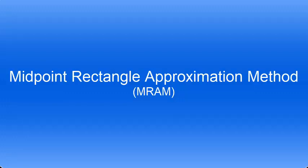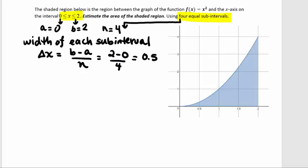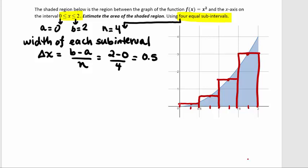The next approximation is the Midpoint Rectangle Approximation. Instead of using right or left endpoints, we go to the midpoint of each interval. Here you can see the midpoint of each of our four intervals. We go up to the height of the function at each midpoint, go left and right to the ends of that interval, and draw the rectangle — repeating this process for each of the four intervals.